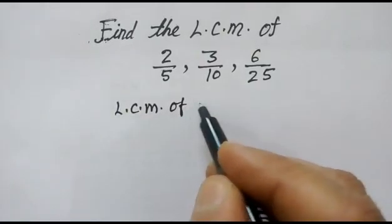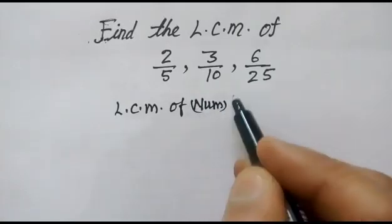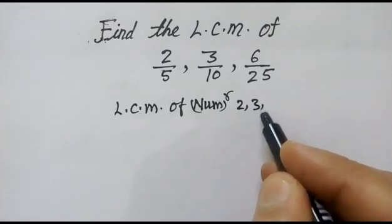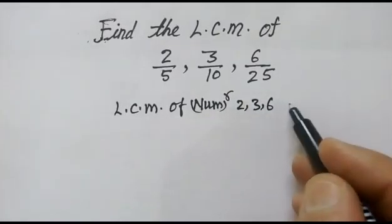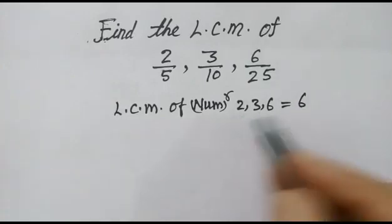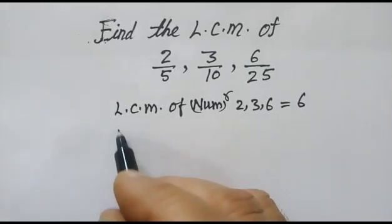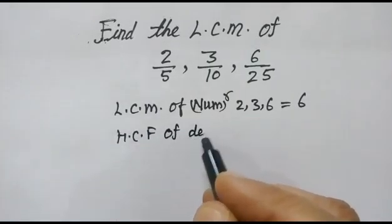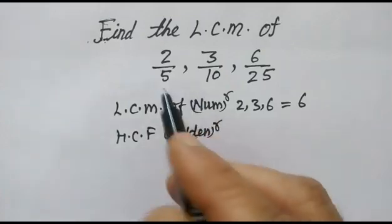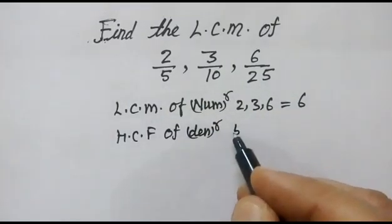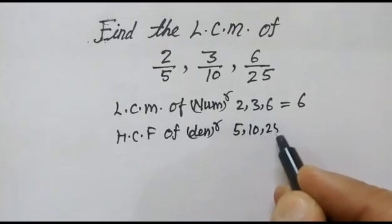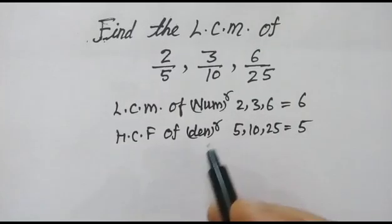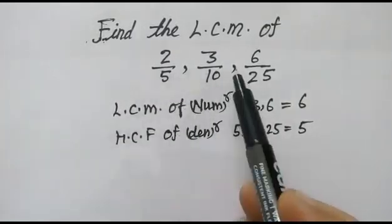The LCM of numerators 2, 3, and 6 will be 6. Now we will find the HCF of the denominators 5, 10, and 25. The HCF will be 5.